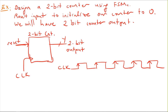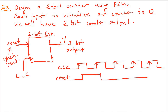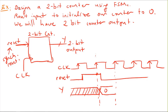The reset signal is active high and synchronous. Initially reset is zero, it goes high for some time, then goes low. The output Y is unknown until reset occurs, because the flip-flops are positive edge triggered. After a reset on the rising clock edge, the state is initialized to zero.